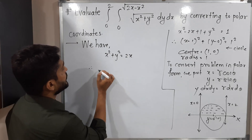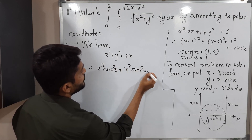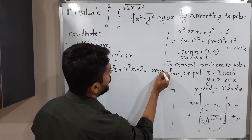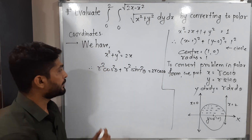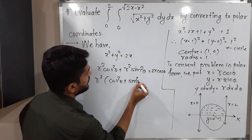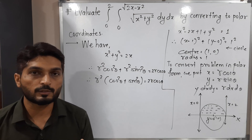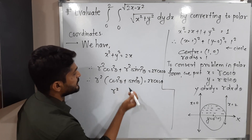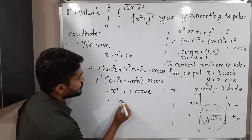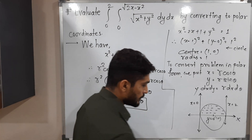Substituting x = r cosθ and y = r sinθ: r² cos²θ + r² sin²θ = 2r cosθ. Taking r² common on the left gives r²(cos²θ + sin²θ) = 2r cosθ. Since cos²θ + sin²θ = 1, we get r² = 2r cosθ, so r = 2cosθ.